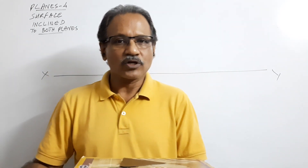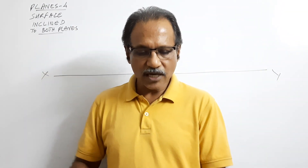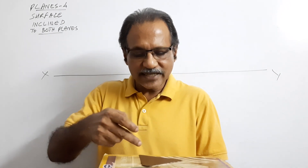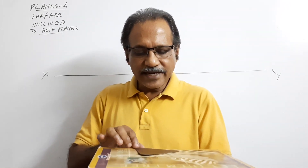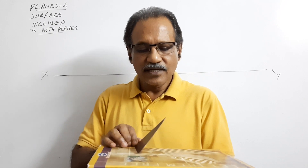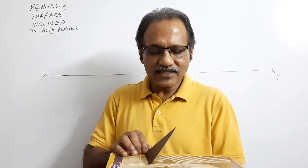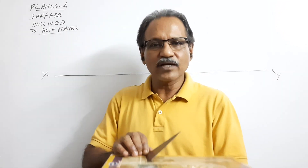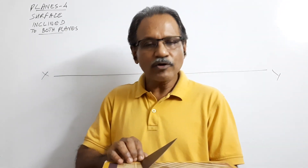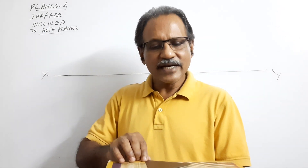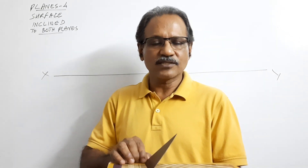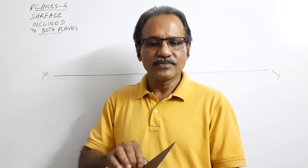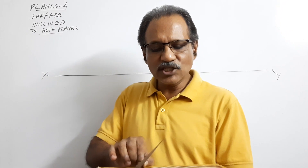Let's explore. Keep the lamina with one side lying on HP, with that side perpendicular to VP. If you tilt it, the lamina will make some inclination to HP, and the side on which it is resting is now perpendicular to VP. To draw this, keep the lamina like this, redraw that elevation, and project a new plan.